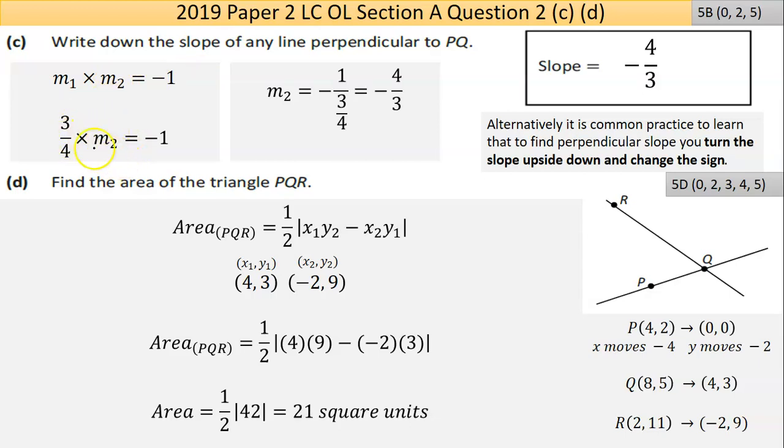If I know one slope, you can use this formula to find the perpendicular. So 3/4 times the perpendicular slope is equal to negative 1. Bring the 3/4 across: negative 1 divided by 3/4, the calculator will tell you that's the same thing as negative 4 over 3. That's the answer I got from the simpler method.